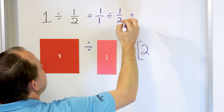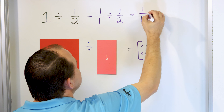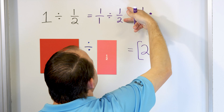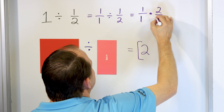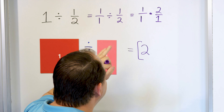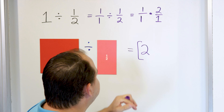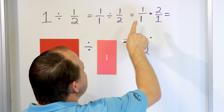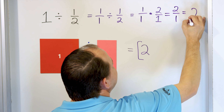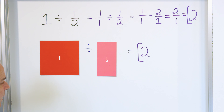The way we divide any two fractions — this is a fraction divided by another fraction — is we keep the first fraction the same, but we change this to multiplication. We change division into multiplication, and when we change it, we take the second fraction and flip it over upside down. So this becomes 2 over 1. Now we multiply: 1 times 2 is 2, and 1 times 1 is 1. So it's 2 over 1, and 2 over 1 is 2 — exactly what we got when we did the pictures.